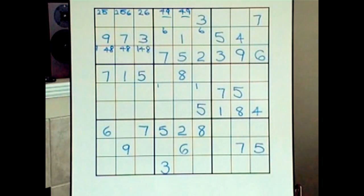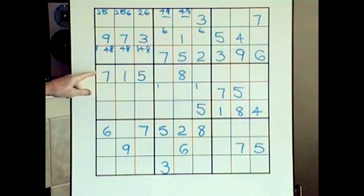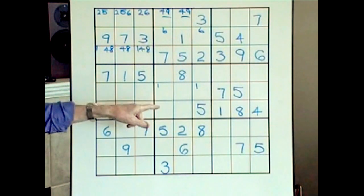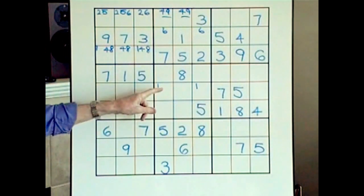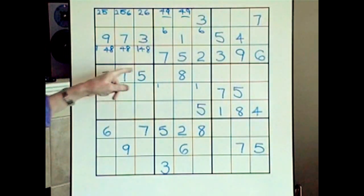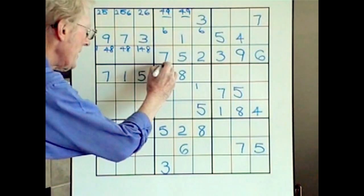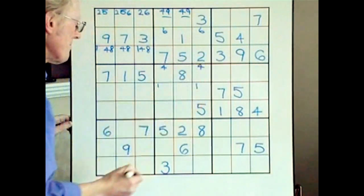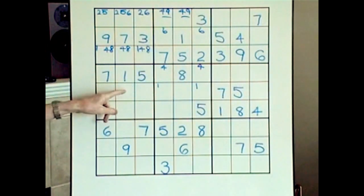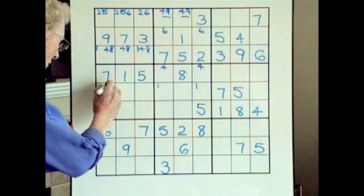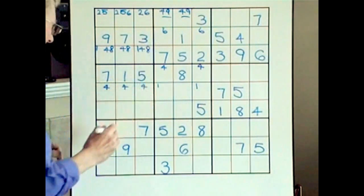Twos — no twos, leave it. Threes — no threes, leave it. Fours — here we go. Because of this particular line, if I were to put a four there or here, it can't go there because it's already in that row. If I were to put it there, there's no place to put it up in here, so we have to put a four here and a four there. Therefore over here we put four fours, which is fairly unusual.